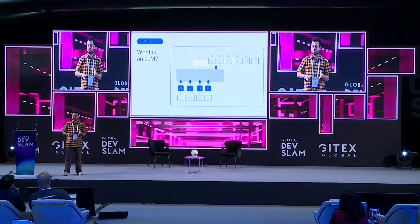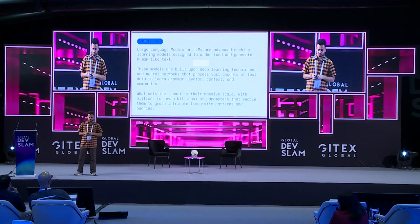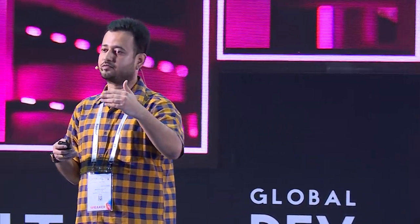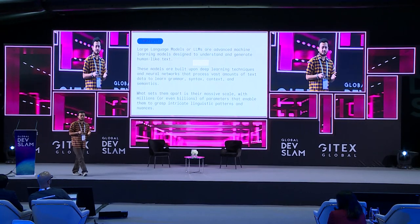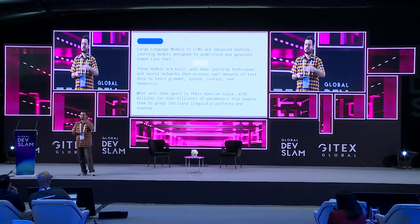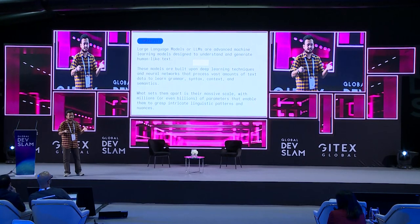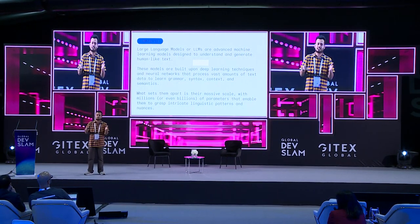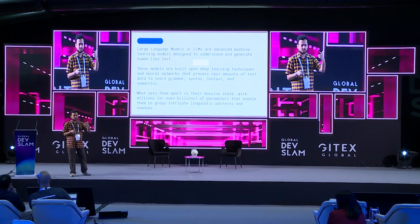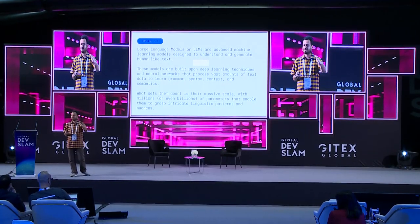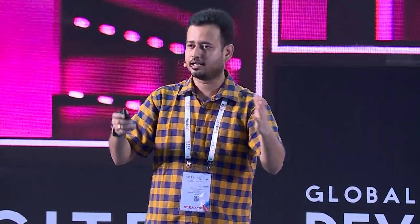Large language models, or LLMs, are advanced ML algorithms designed to understand and generate human-like text. The reason they've exploded in recent years is the scale at which they've been trained and the size of the models. There are different aspects to why LLMs have taken off — the data they're trained on and the scale at which they operate, with billions of parameters trained during the training process and used during inference.